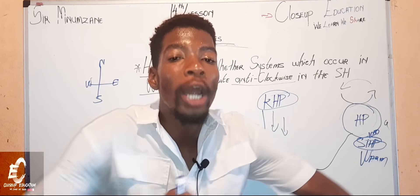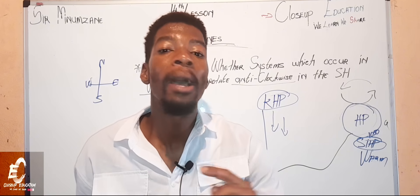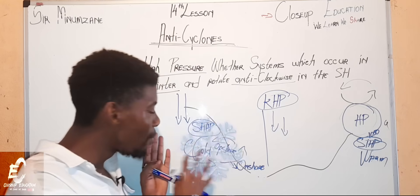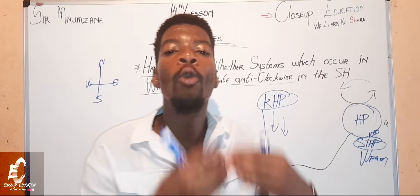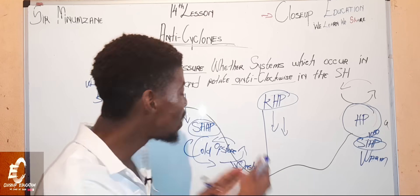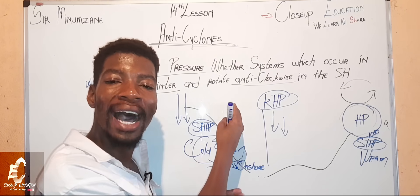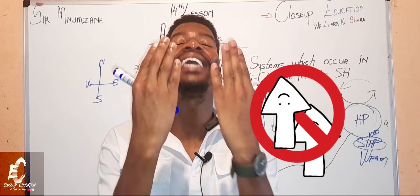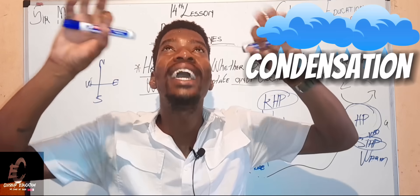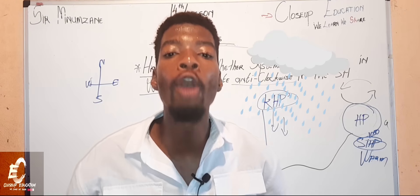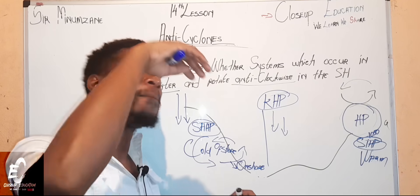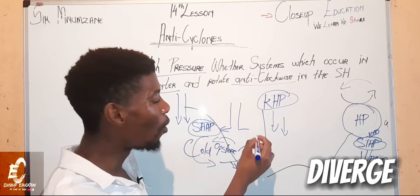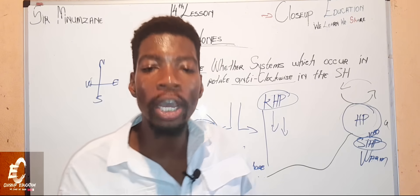The Western Cape area will experience cold conditions — you'll have to put on more than one jacket. When it is winter there are no clouds because there is no ascending air; ascending air is responsible for creating clouds. So in this area there will be descending air that descends and diverges across the land.